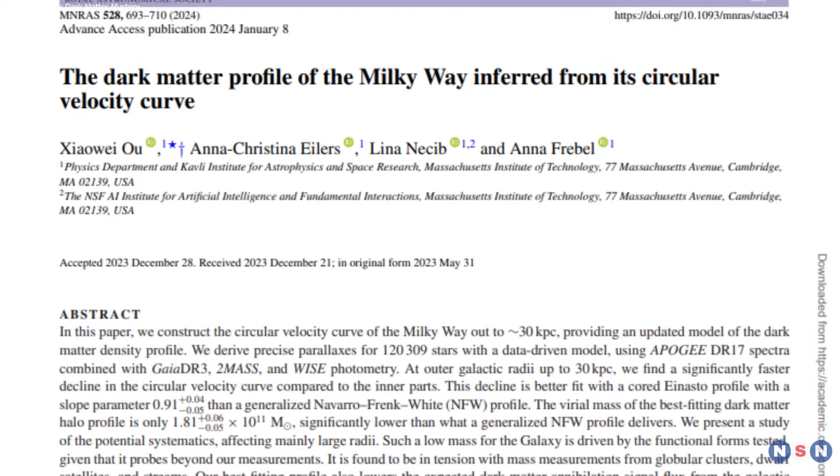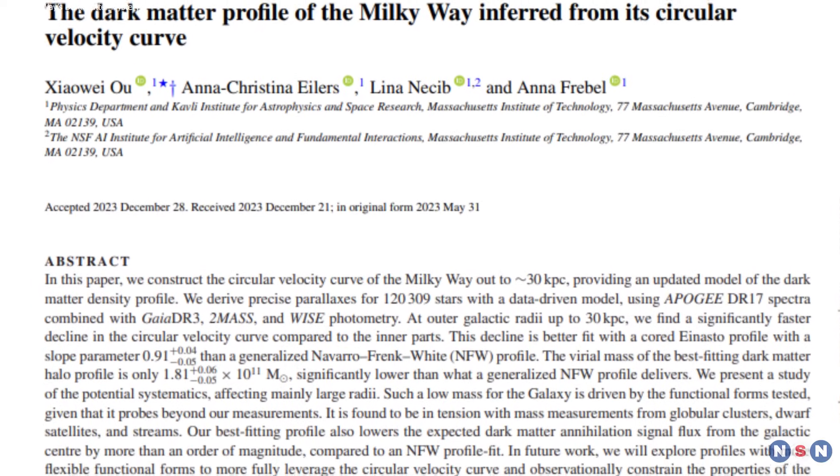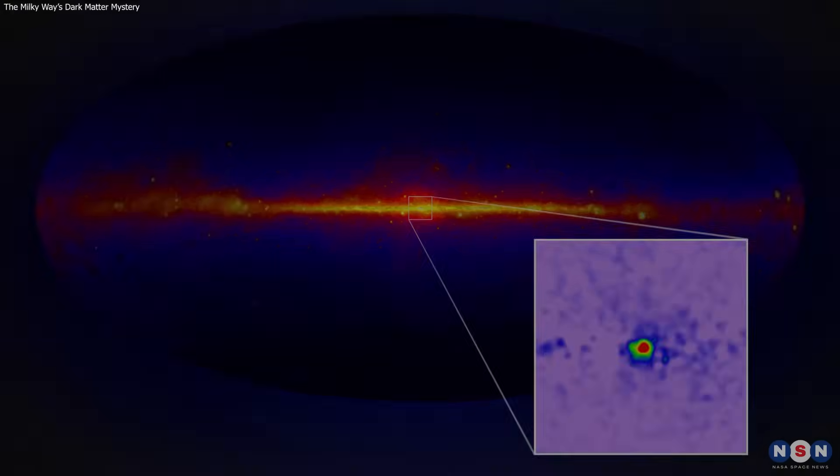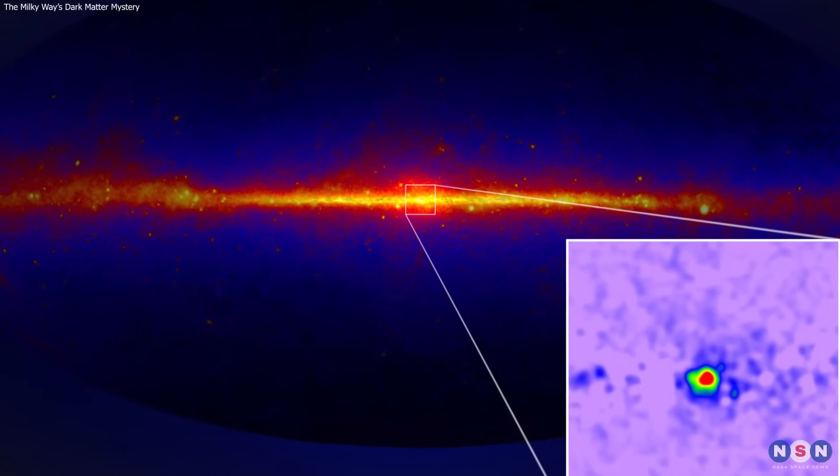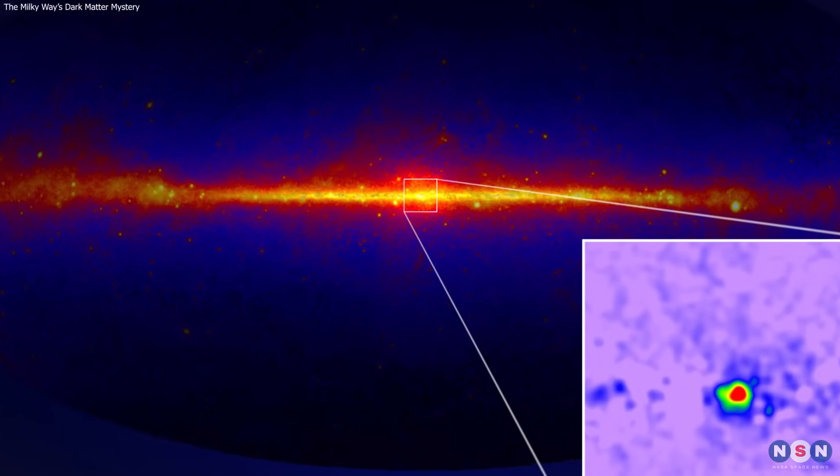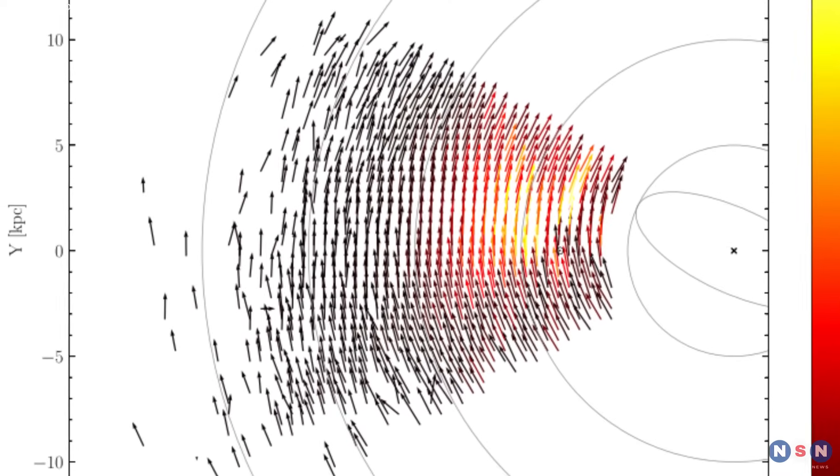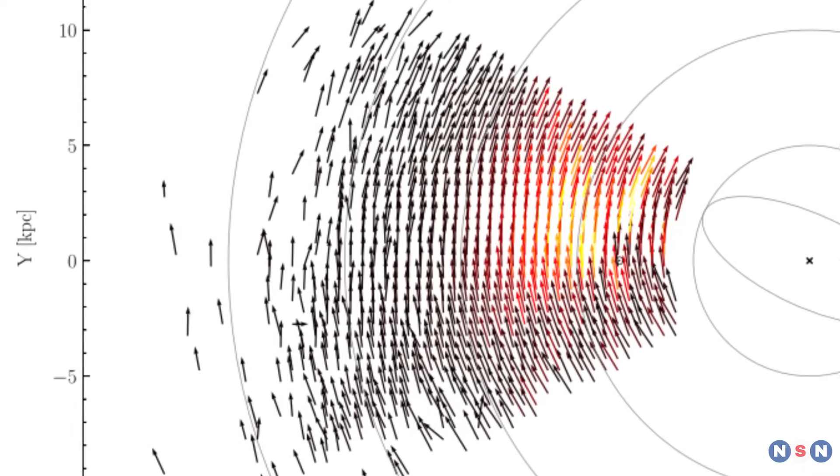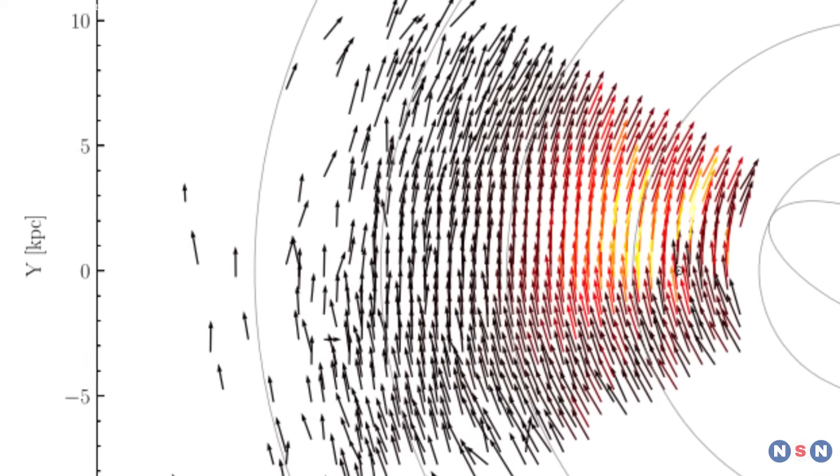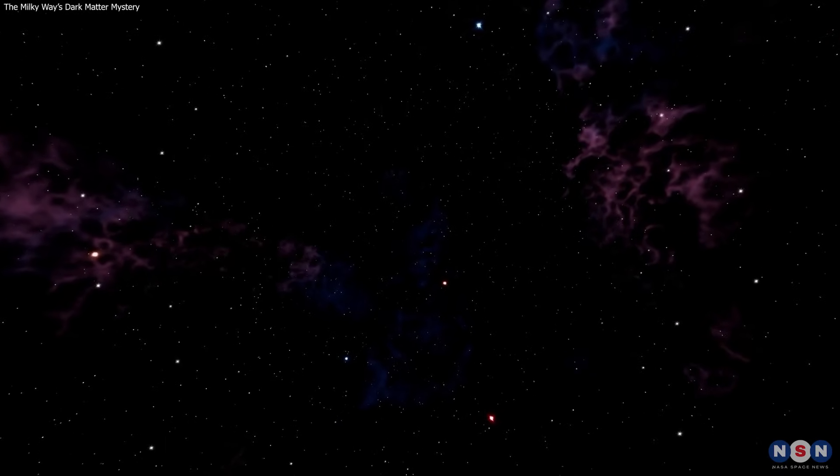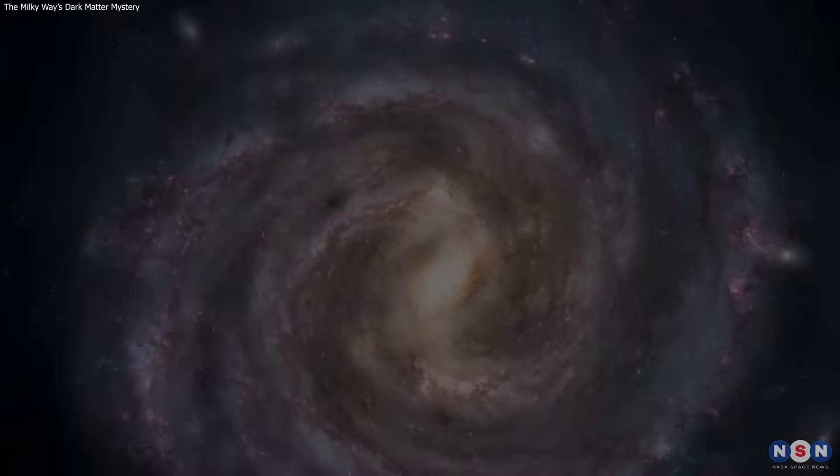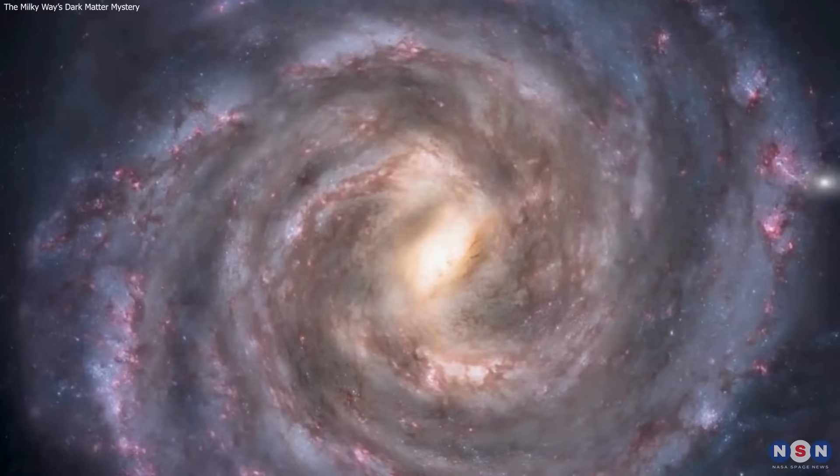In this video, I have told you about a new study by MIT physicists that suggests that the Milky Way galaxy's core may contain less dark matter than previously estimated, based on the surprising discovery that stars at the edge of the galaxy travel more slowly than expected. I hope you have enjoyed and learned from this video, and that you are as fascinated and curious as I am about the Milky Way galaxy and its dark matter content.